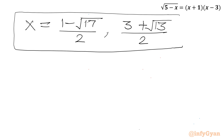So our final solutions are (1 minus root 17) divided by 2 and (3 plus root 13) divided by 2; the rest are extraneous solutions. I hope friends you will like this video. Thank you so much for watching — do not forget to like, share, and subscribe. Bye bye, good luck, take care!